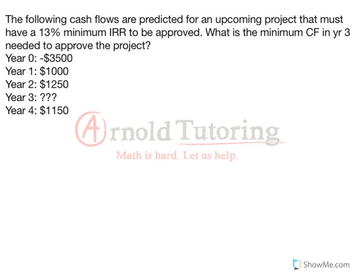Here we've got an IRR question from our course 5 midterm, and there's two different ways to run this. We can actually do it just solely using the calculator, but we can also set up the algebra to see what we're actually doing. I'm going to set up the algebra, and then we'll talk at the end about how to do this in an even quicker way using the calculator.